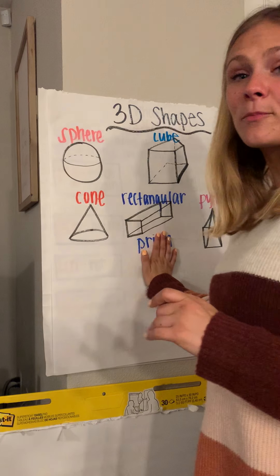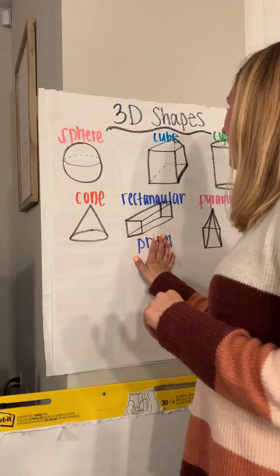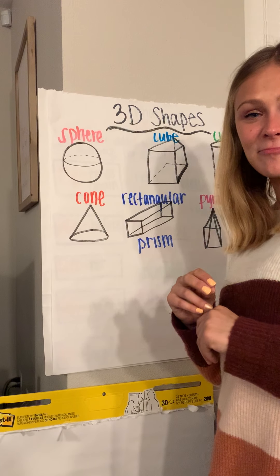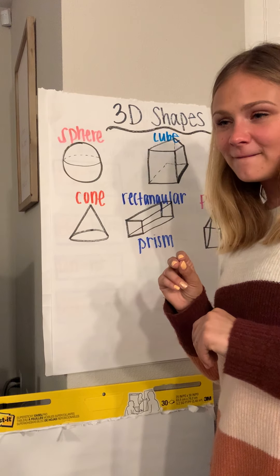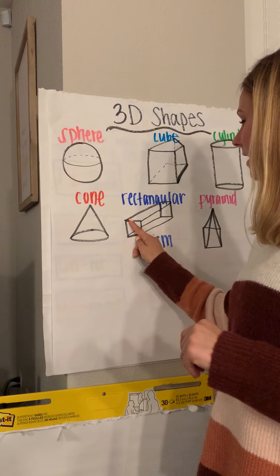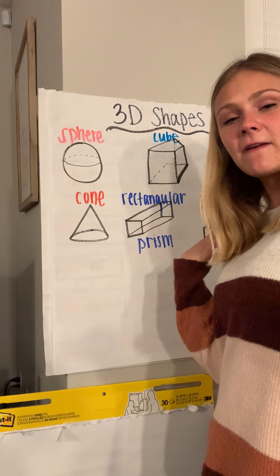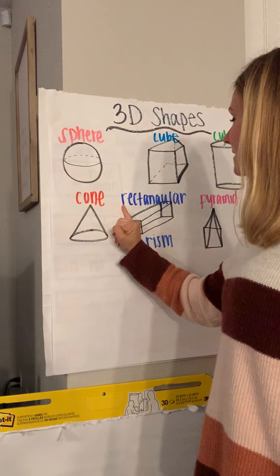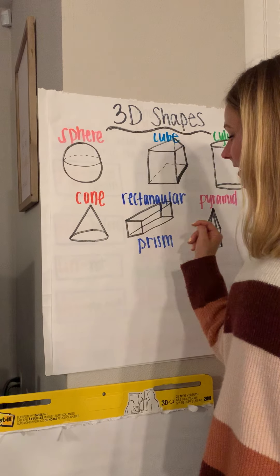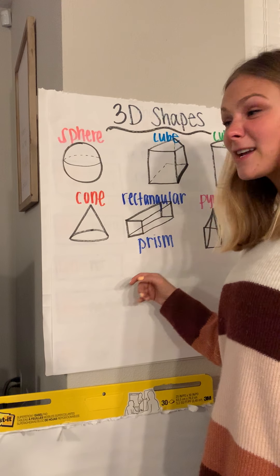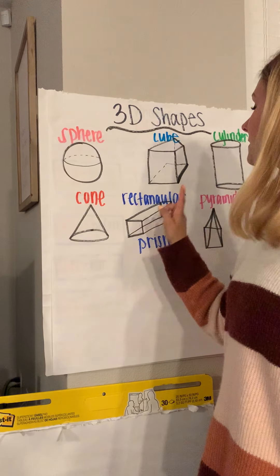The next one is probably our hardest 3D shape — it's going to be a very long word. It is called a rectangular prism. Try and say that: rectangular prism. It's a tricky word. You can see that this long shape looks like a rectangle, but we already know a rectangle is a 2D shape, so the 3D shape name is rectangular prism. This looks like a Christmas tree box, a really tall box, or even a cereal box — a tall and skinny box is a rectangular prism.